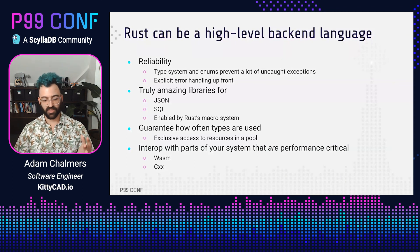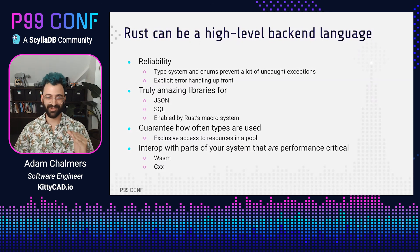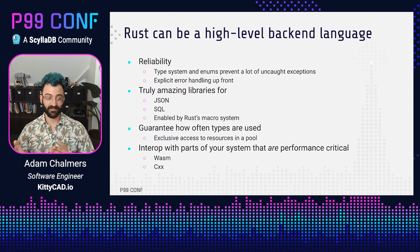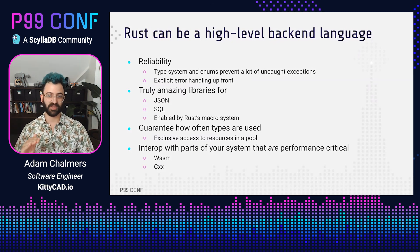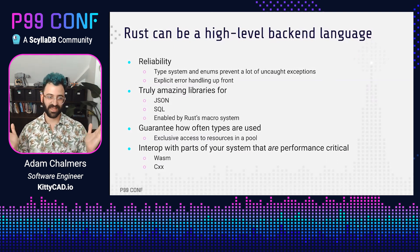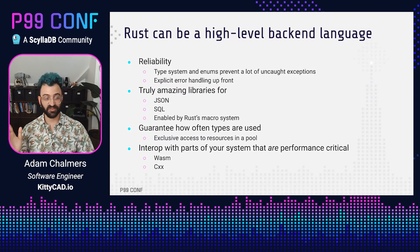So this is why I tend to think Rust can actually be a great high-level language for writing backends. It's very reliable because its type system and enums force you to handle errors at design and compile time, so you are less surprised at runtime. It has really great libraries for JSON and SQL — which, let's be honest, is a lot of what writing a backend is about. These are enabled by Rust's macro system, which lets you generate code to make sure you're not writing boilerplate by hand, meaning fewer typos and fewer unit tests needed. You can also enforce high-level invariants like how often a resource is being used. And Rust can interoperate with high-performance parts of your system like C++, and even the front-end by compiling code to WASM and calling it from JavaScript.